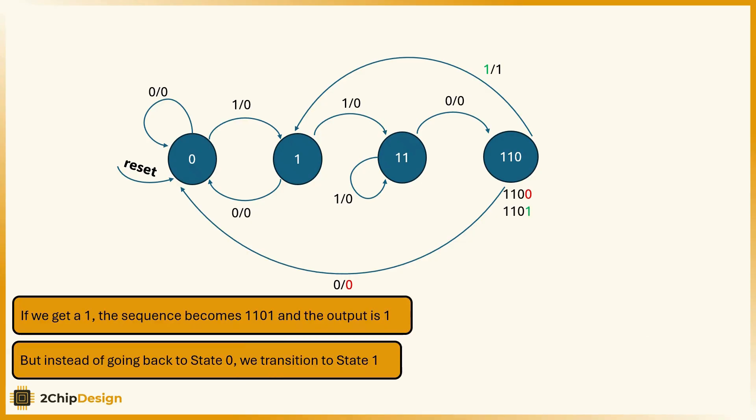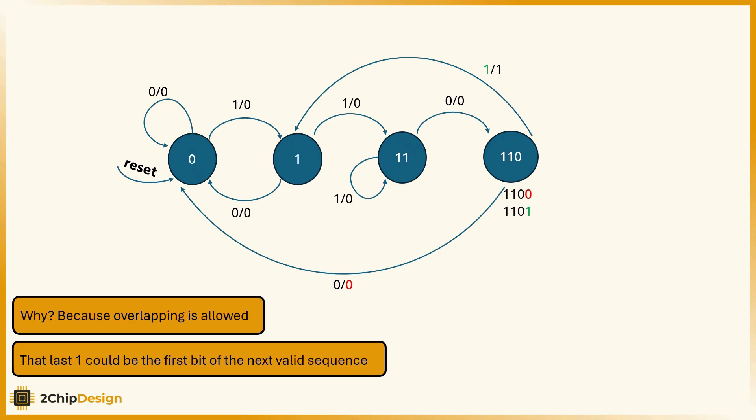If we get a 1, the sequence becomes 1101 and the output is 1. But instead of going back to state 0, we transition to state 1. Why? Because overlapping is allowed. That last one could be the first bit of the next valid sequence.